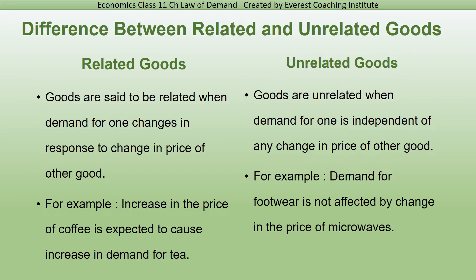There are also unrelated goods. Two goods are unrelated when the demand for one is independent of any change in the price of the other. For example, the demand for footwear is not affected by a change in the price of microwaves.